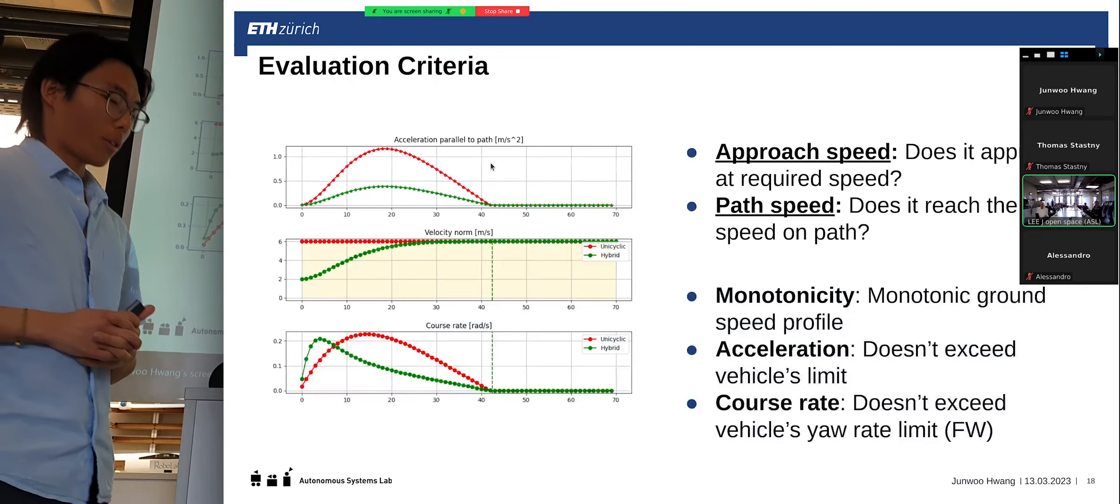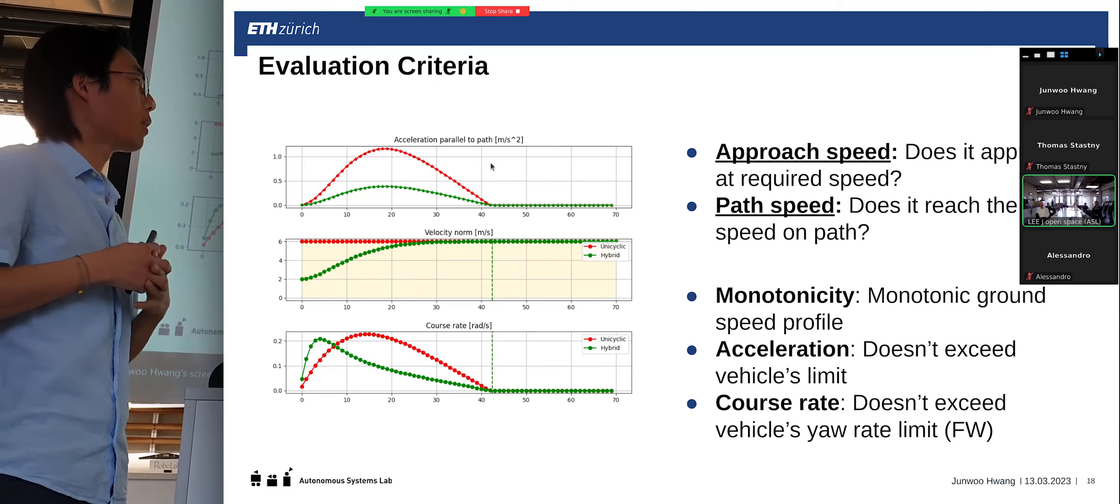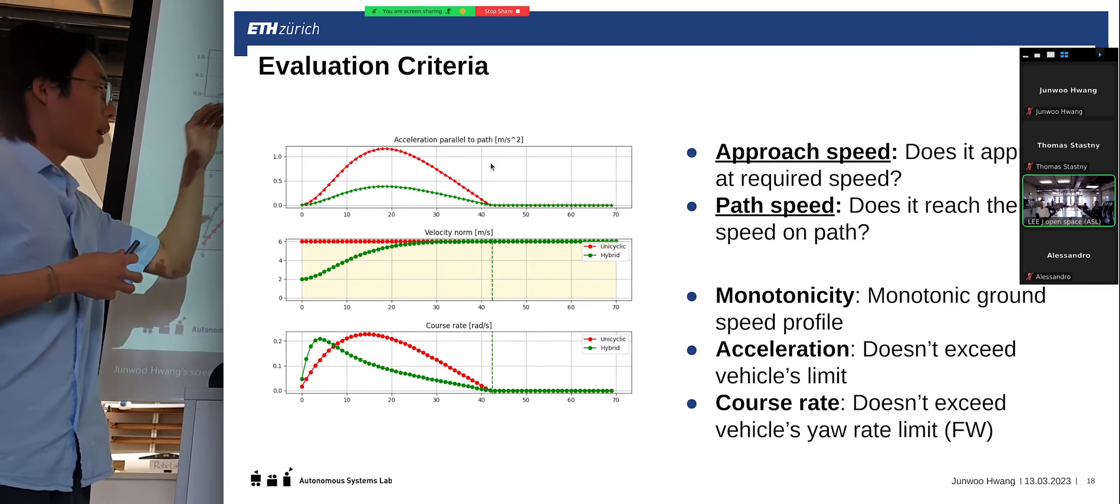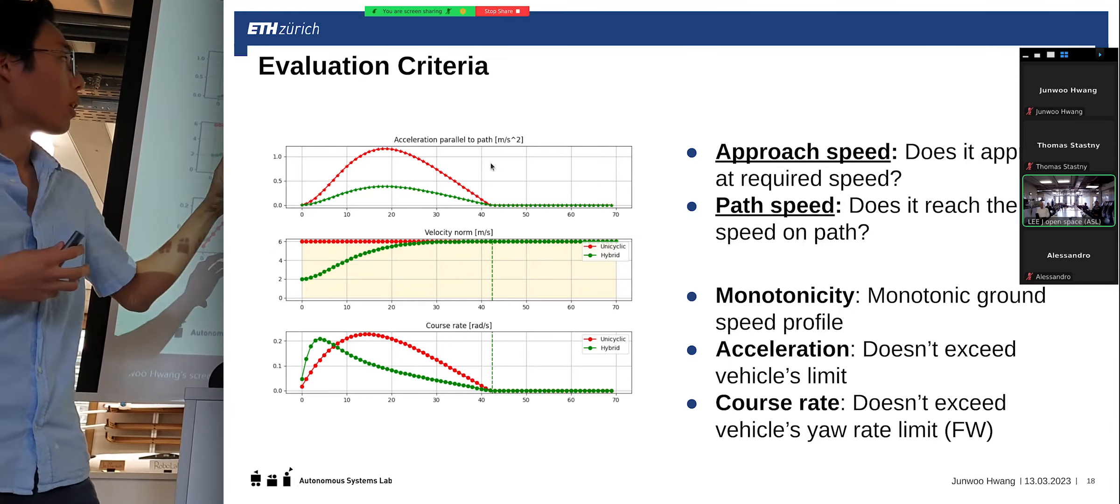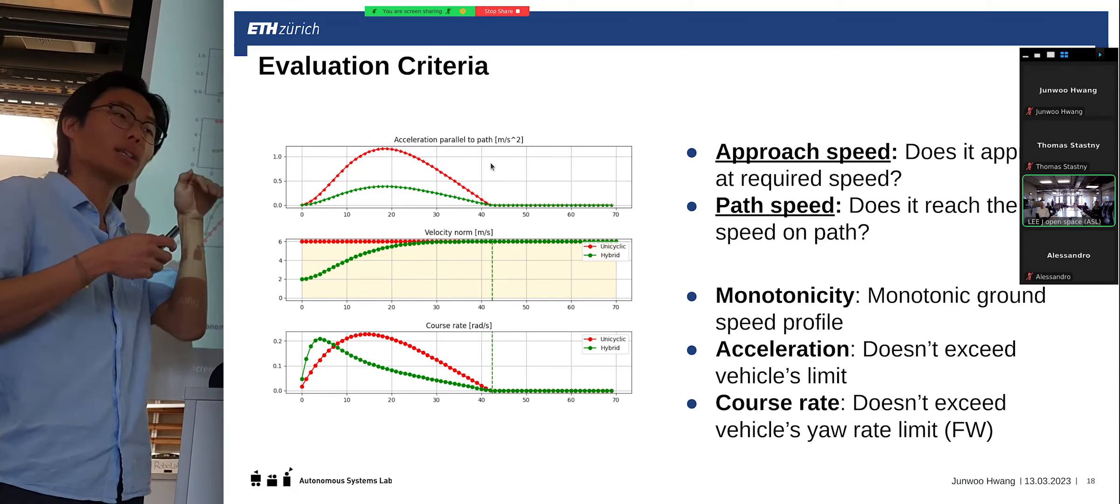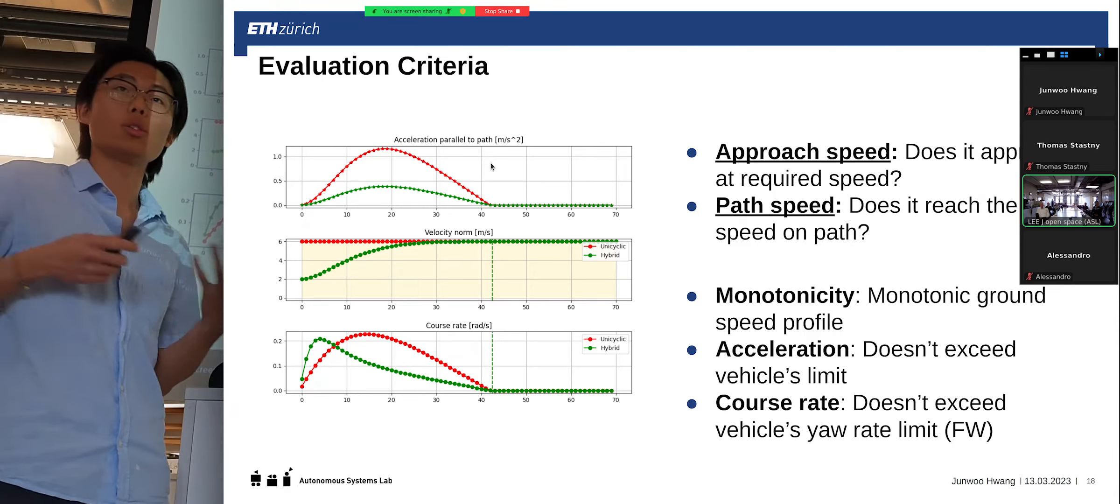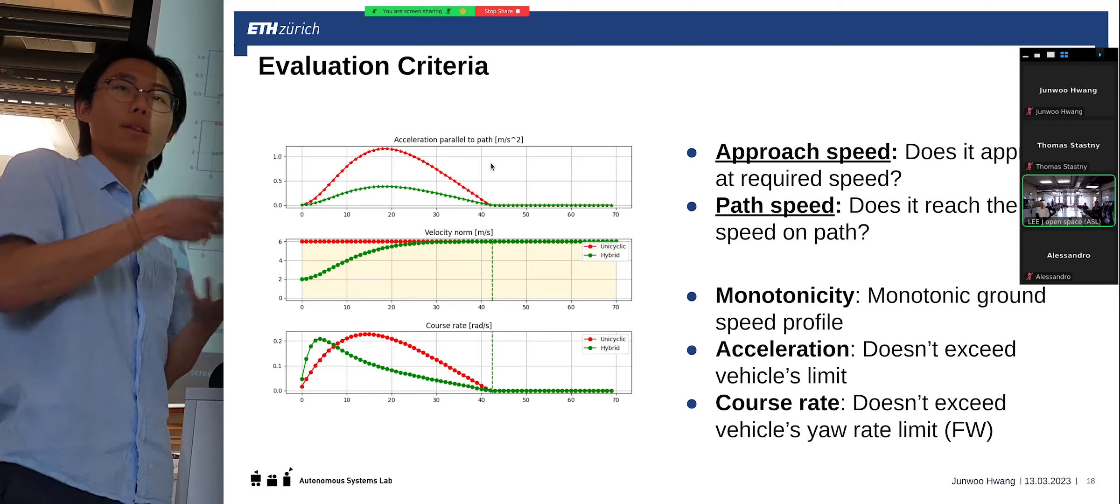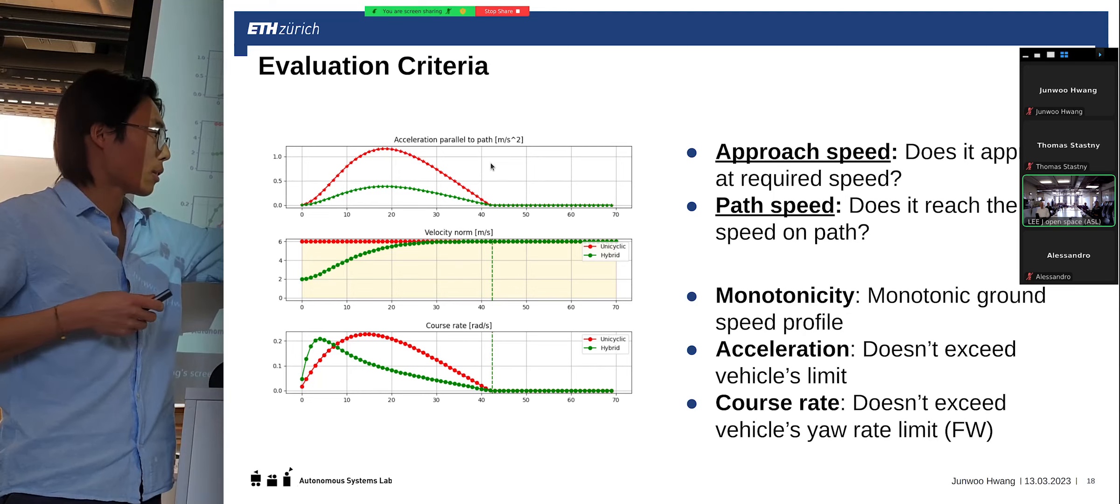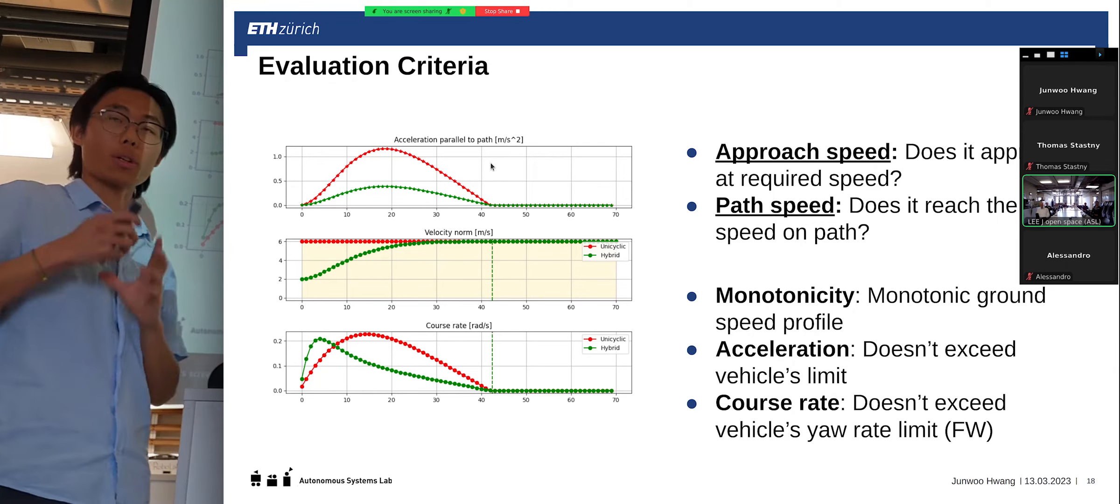So, we'll talk about evaluation. First, two most important things, approach speed and path speed. Does it actually approach at the speed that we want, and does it actually follow the path at the speed that we want? And, on top of that, we can also evaluate the monotonicity, which means, does it brake and accelerate, or does it constantly brake or accelerate, which is the desired behavior we want, because we don't want the vehicle to be expending energy and then consuming it. That's undesirable. And, two further points on acceleration and course rates are also considered. However, these were not the main focus for the current process.